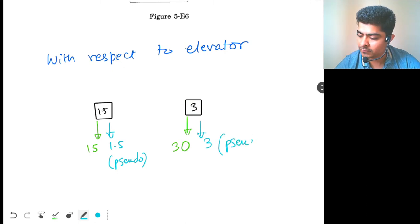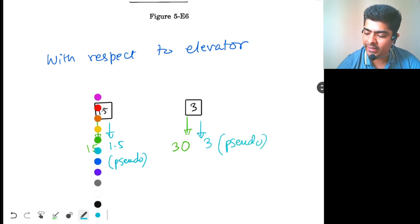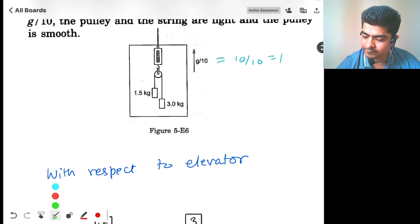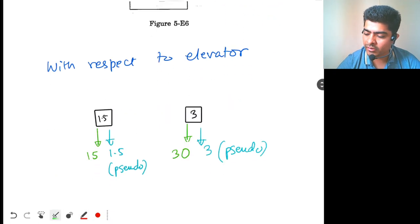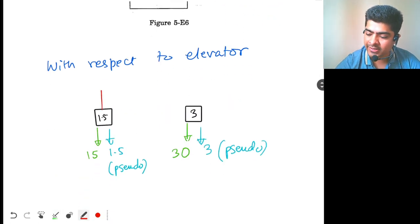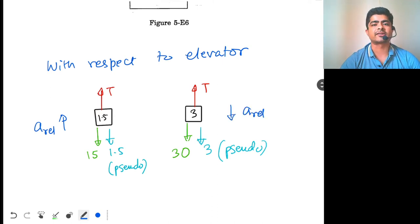So, this is your pseudo force. And finally, we have tension. The rope is applying tension on both the blocks. So, here we have tension t upwards. Here also we have tension t upwards. Now, the blocks will go with respect to elevators. This will go up with relative acceleration. This will come down with relative acceleration. Acceleration with respect to elevator.